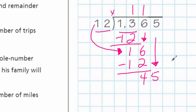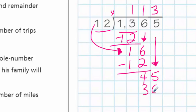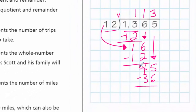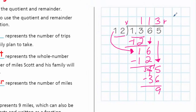Then 12 goes into 45. 12 times 4 is 48 — that's a little too much. So we go with three times, giving us 12 times 3, which is 36. We need to regroup here, so we borrow a 10. Now we have a remainder of 9.